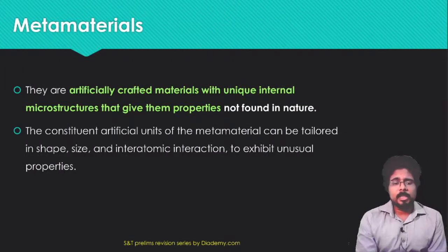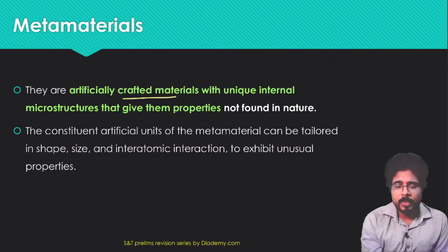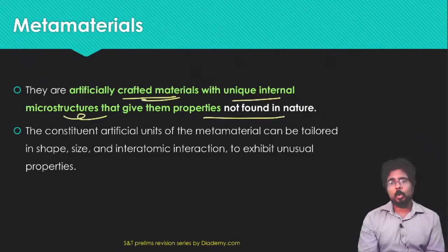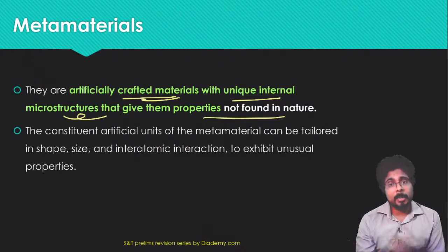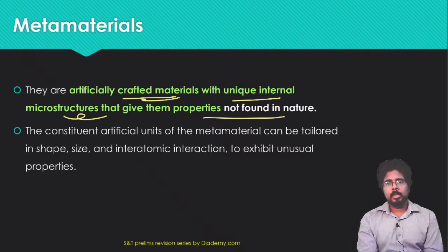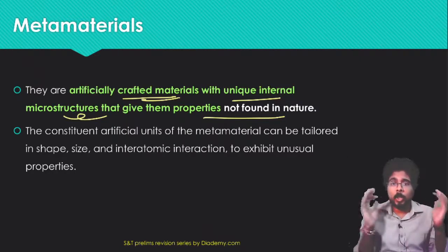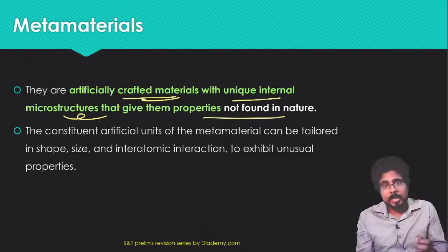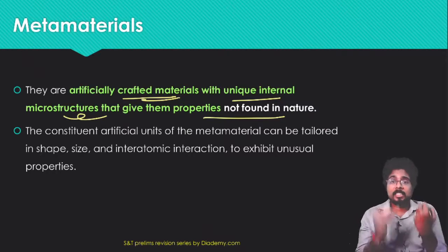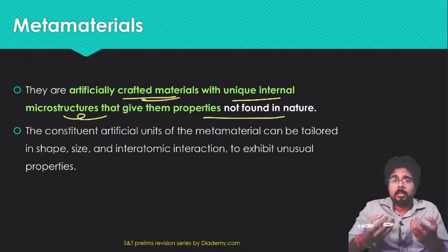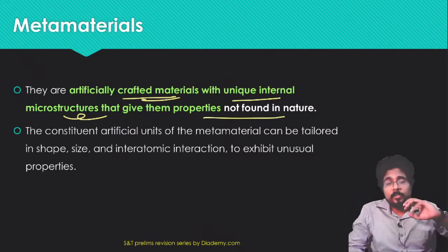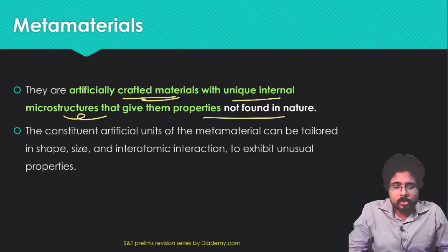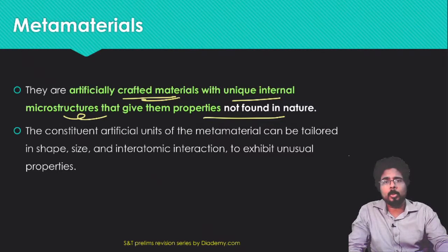Next, metamaterials. Metamaterials are artificially crafted materials with a unique internal microstructure that gives them properties not found in nature. They are artificially made with unique internal microstructures, giving them special properties. Since different materials have different properties, using engineering techniques we create these special materials that have all our desired properties. The constituent artificial units of metamaterials can be tailored in different shapes, sizes, and interatomic interactions to exhibit unusual properties.